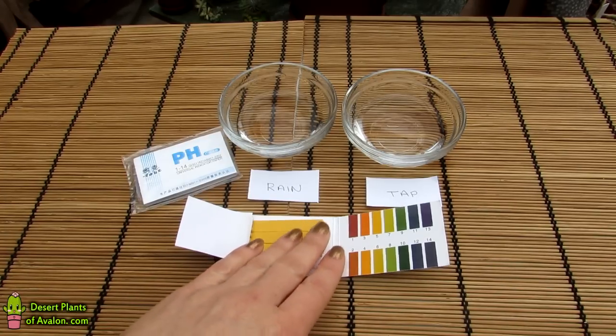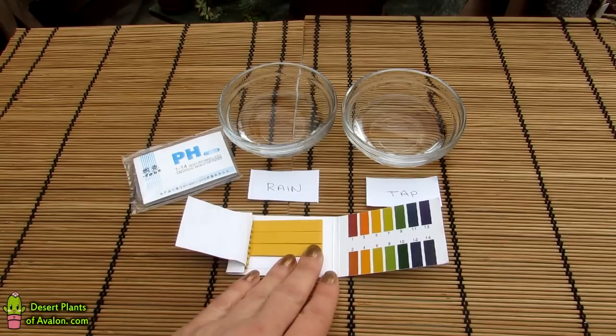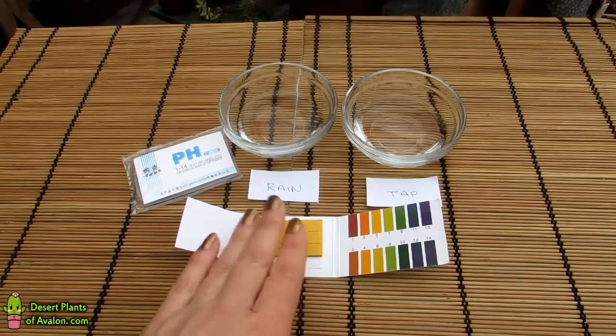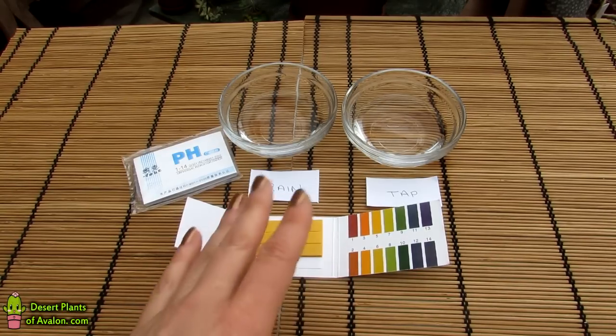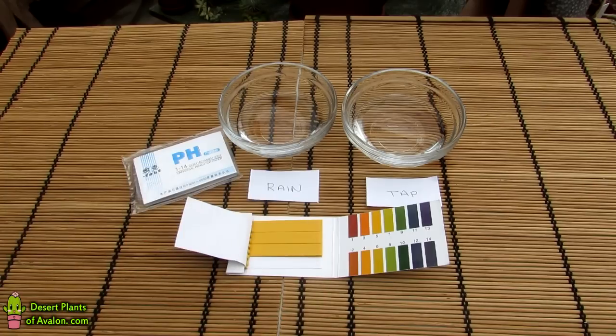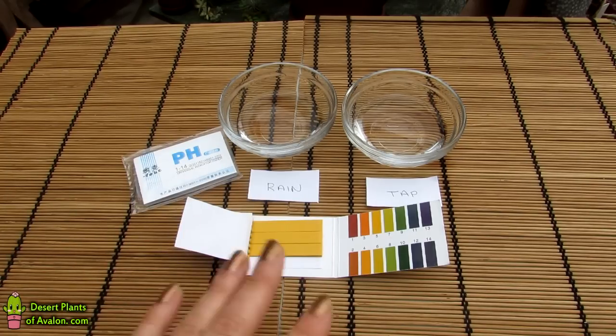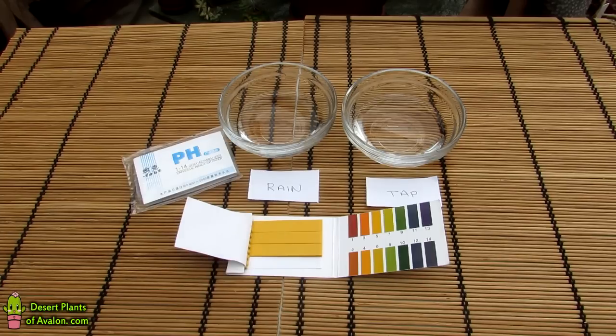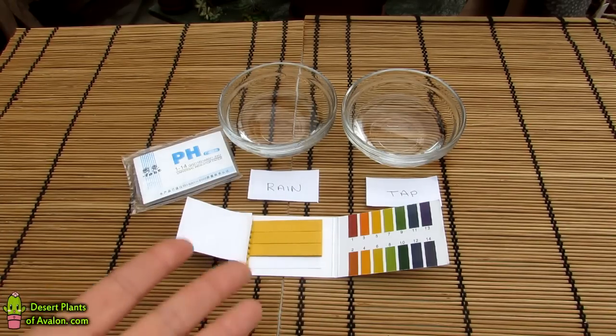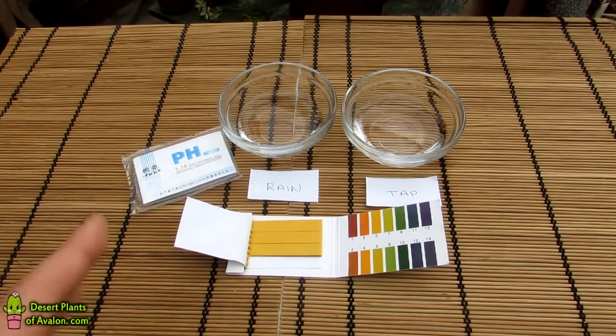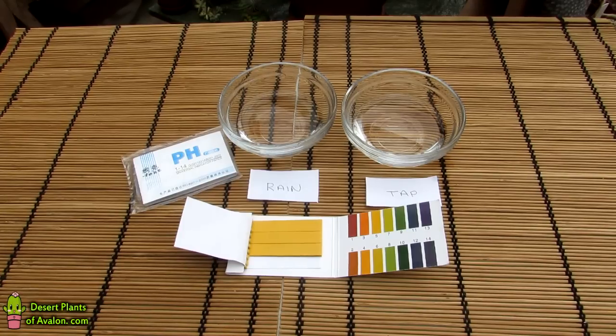I went out and got one of these little pH test strips and checked the pH of my water. I'd read that the correct pH for watering cacti and succulents is ideally anything between 5.5 to 6.5. Mine in England was 7.0, so a little bit above what it should be, but I had no problems because it was still on a neutral scale.